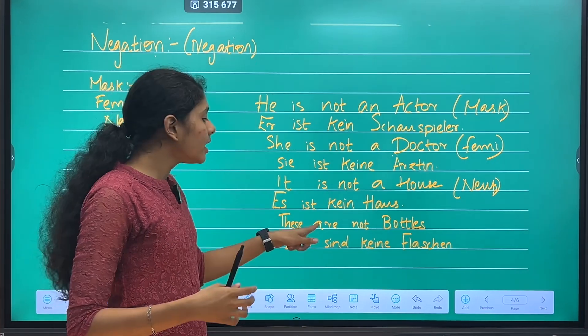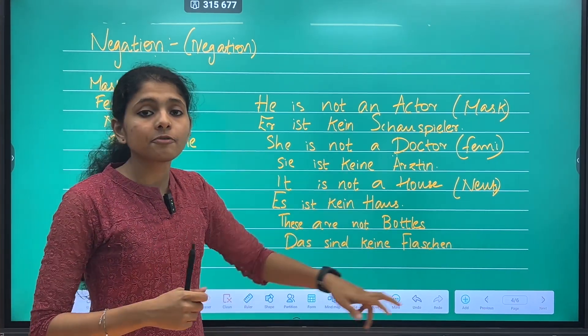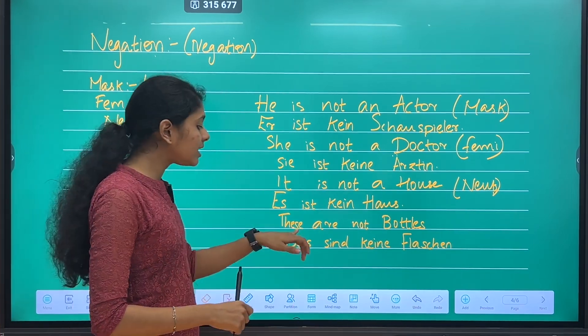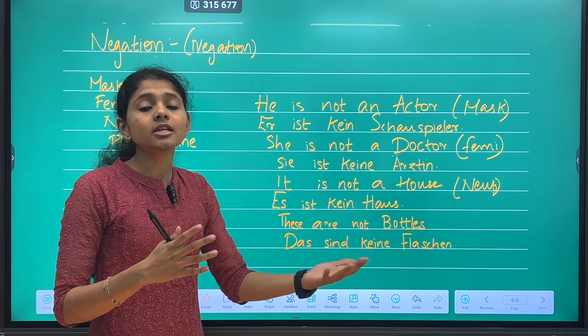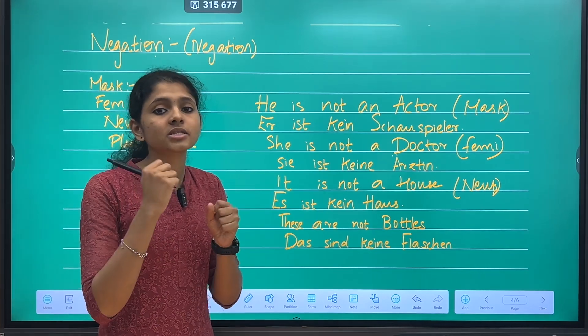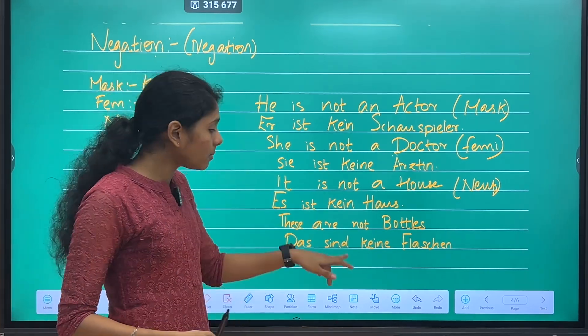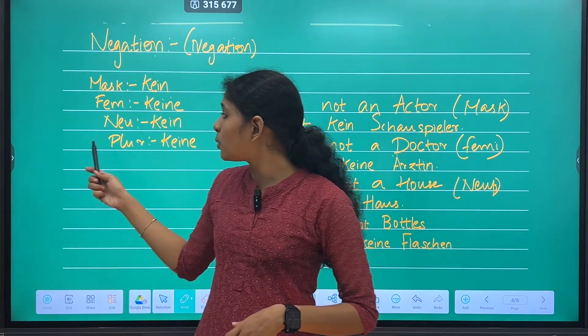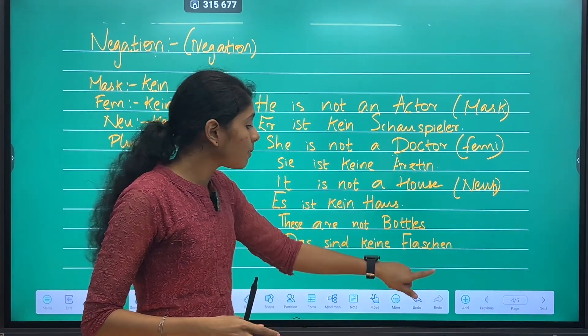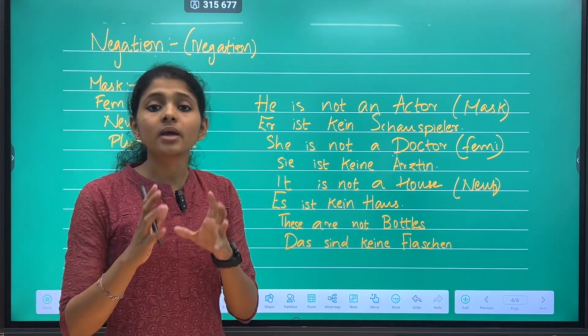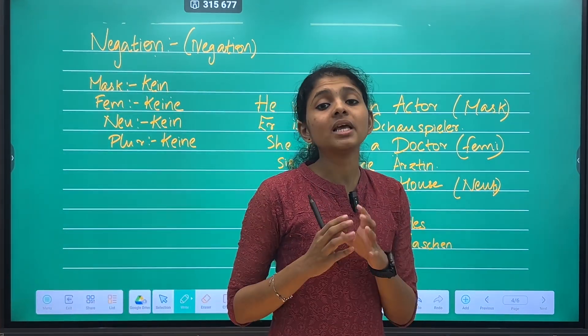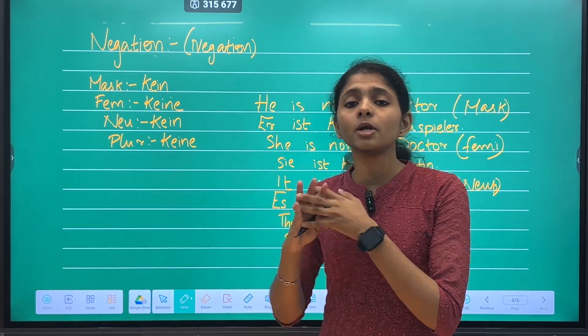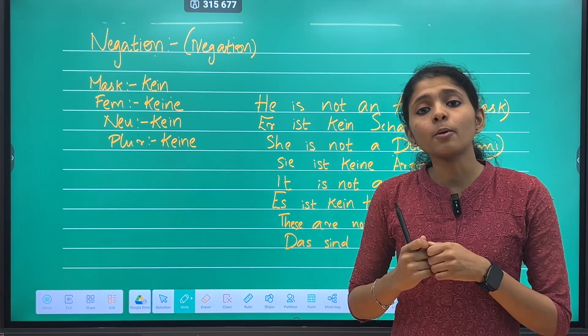In plural, we use 'sind'. Then we use 'sein' - the verb 'sein'. Not bottles. This is plural. We use 'keine' in plural cases. We use 'keine Flaschen'. This means when we use negation, we use the nominative case. Best example - we use negation articles in the nominative case. Okay? Thank you.